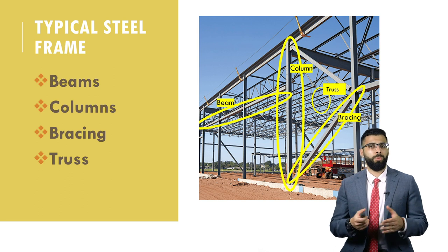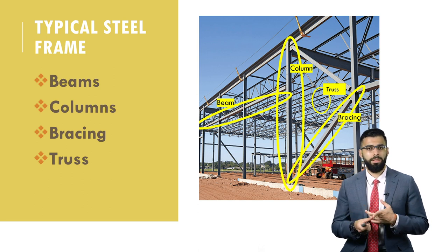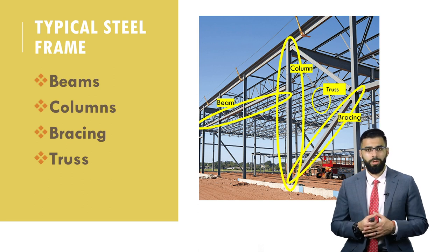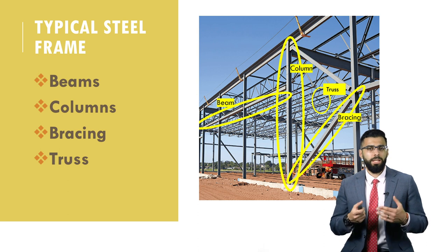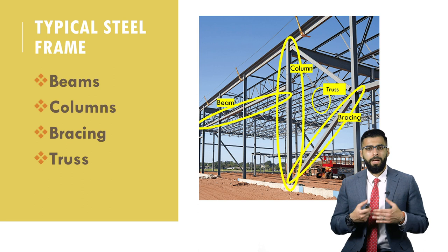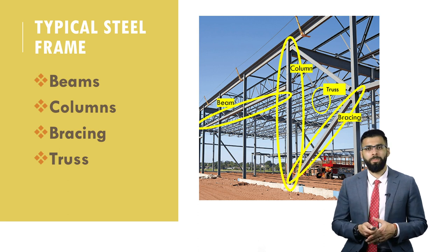A typical steel frame is composed of four main members: beams, columns, bracing, and trusses. Bracing is essential because you need it to resist horizontal loads such as wind loads and earthquakes. A truss system is usually used for the roof structure and is very efficient because it handles only two kinds of forces — compression and tension — with no bending or twisting imposed. This makes truss systems very cost-effective in certain structures.